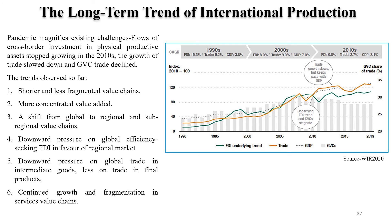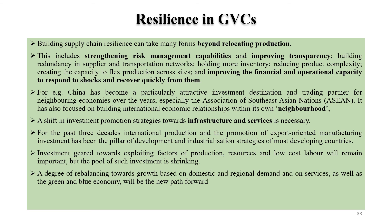We have also noted the slowdown of FDI, especially in promoting fragmented productions, and a decline in global trade. Building supply chain resilience can take many forms beyond relocating production. This includes strengthening the risk management capabilities, building redundancy in suppliers and transportation networks, holding more inventory, reducing product complexity, creating the capacity to flex production across sites, and improving the financial and operational capacity to respond to shocks and recover quickly.